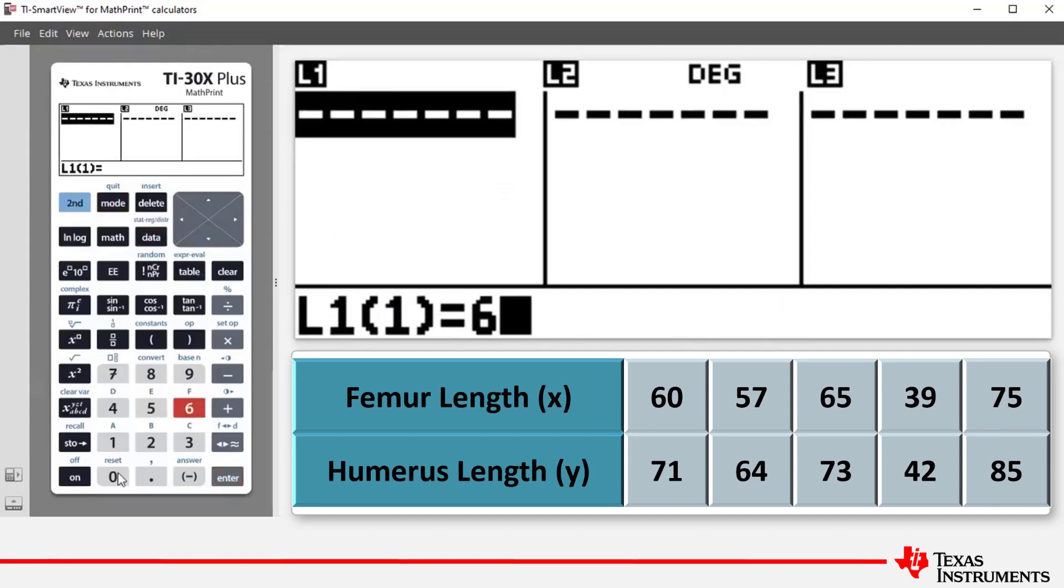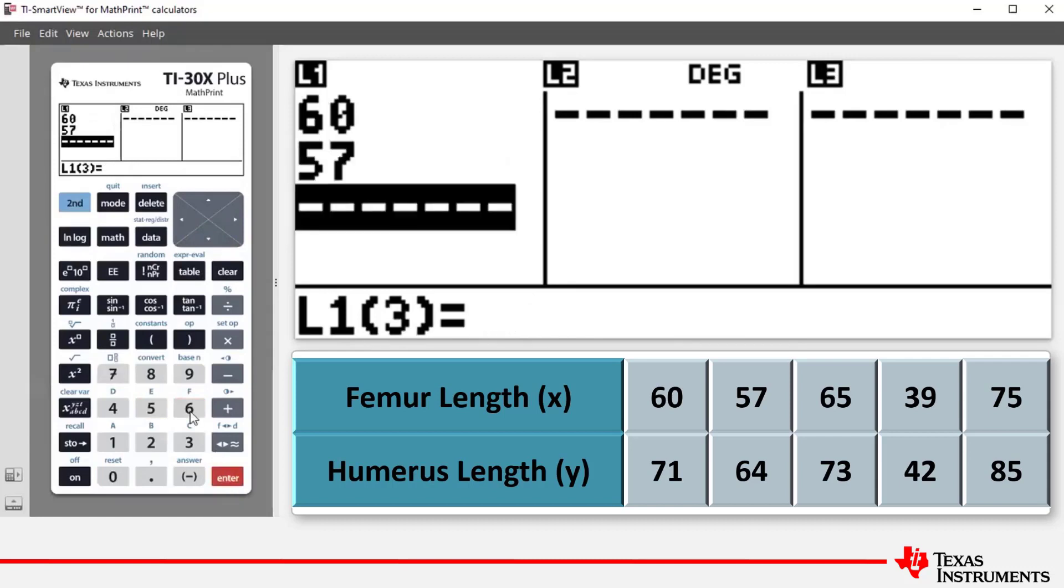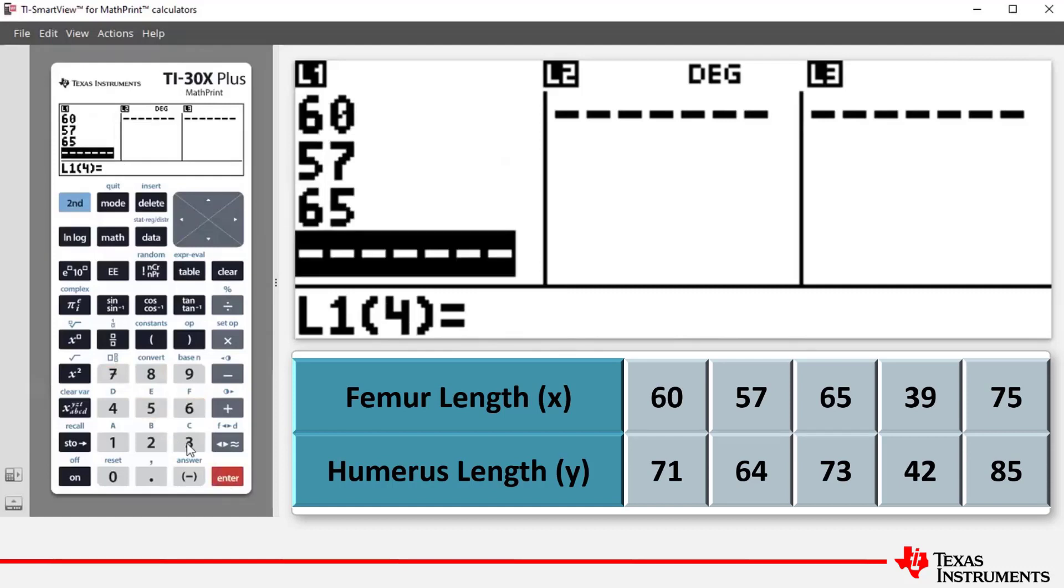So we start with the femur, and I'm entering the data. I'm pressing enter each time. You can also press the down arrow. That will work the same way. So the five femur lengths have been entered into L1.